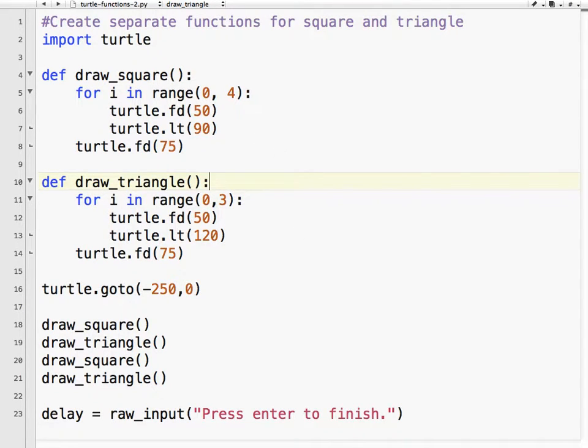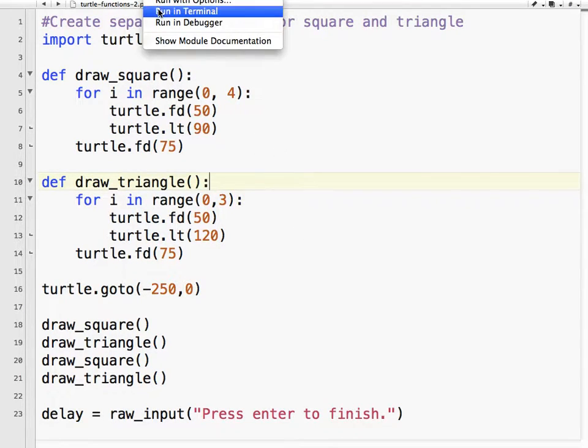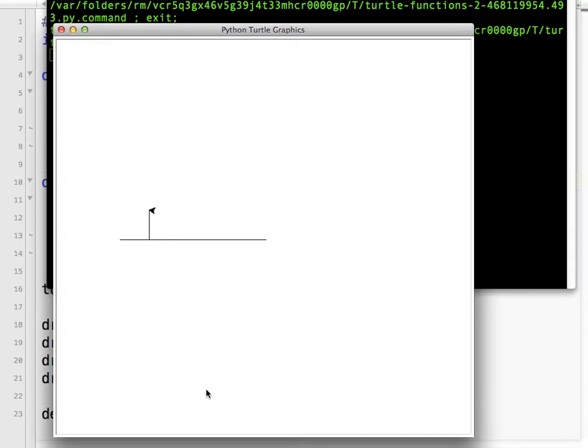Okay, so welcome to part two of Turtle Functions. We're going to run this and see what we have so far. We have created a function called drawSquare and a function called drawTriangle, and we are calling those functions in a row. The drawing looks a little bit like a city skyline.